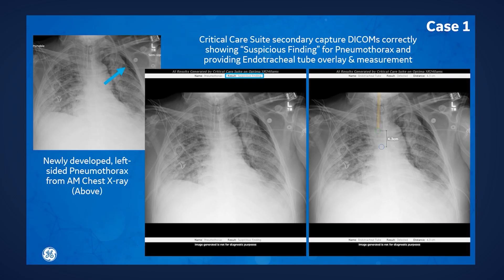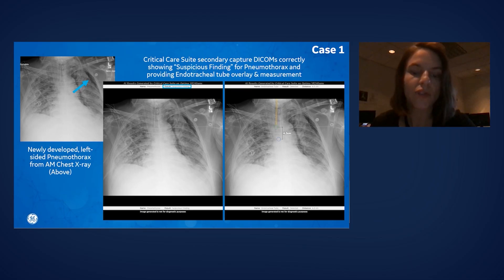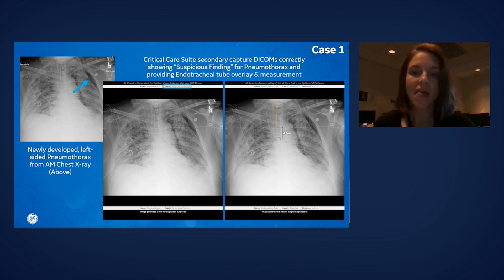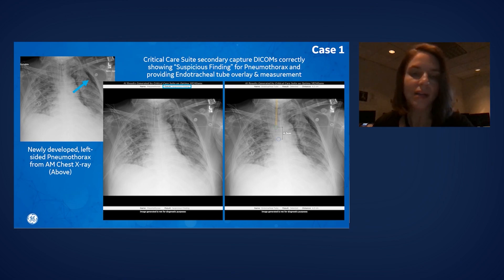So in this first case, we have a patient with ARDS who had a newly developed left-sided pneumothorax on a routine morning chest radiograph. You can see on this slide the critical care suite output showing that there is a suspicious finding for pneumothorax at the top of the screen. On the second overlay, you can also see the endotracheal tube localization tool highlighting the endotracheal tube and providing a distance from the carina. That's how the secondary captures appear to us in this particular case.